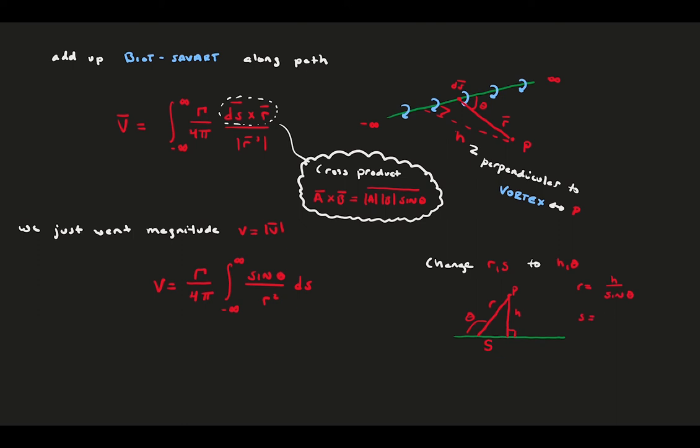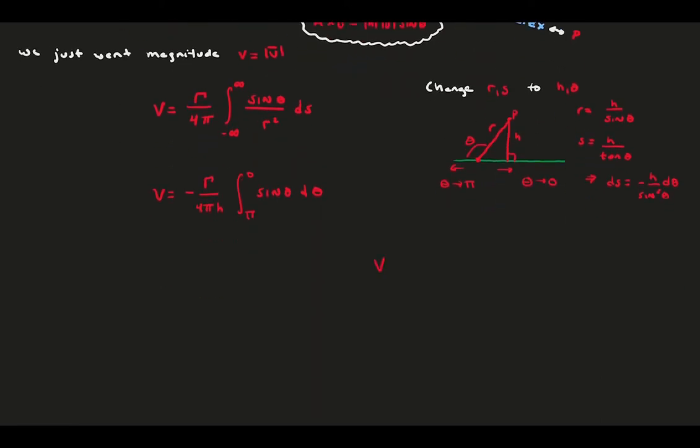Also, we want to change our bounds to be from minus infinity to infinity into the angle, which means that the angle goes from pi to zero, respectively. Add this and the trigonometry equations into our main equation, and we get a relatively simple integral to solve. This leaves us with the equation for the induced velocity for an infinite vortex, gamma over 2 pi h. This means that the induced velocity increases linearly with vortex strength and decreases linearly with a distance away.